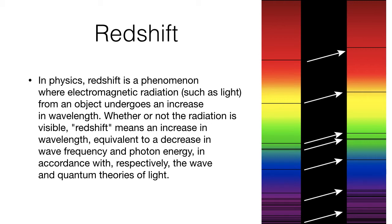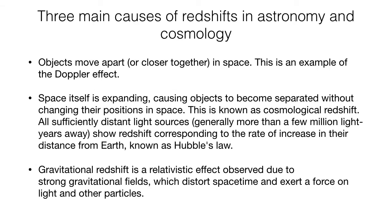So we know that when the spectrum shifts towards the red, that means the source is moving away from us. There are three different possible reasons why we observe redshift. For most of the stars we can observe from Earth, almost all demonstrate redshift. The three possible reasons are: first, the object is moving away from us — that is the Doppler effect. Or, second, the space itself is expanding, causing objects to become separated without changing their positions in space — this is known as cosmological redshift. And third, there is gravitational redshift, which is a relativistic effect.